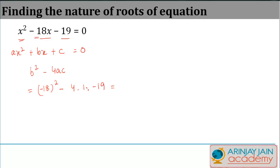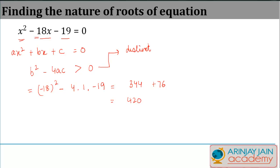c is minus 19, so minus 4 times 1 times minus 19 gives plus 76. And 18 squared equals 324, giving us 324 plus 76 which equals 400. So b squared minus 4ac is greater than zero, therefore the roots are distinct and real.